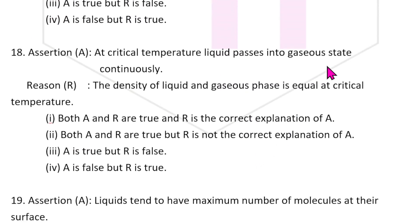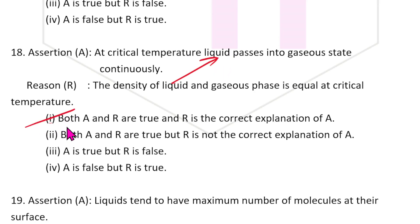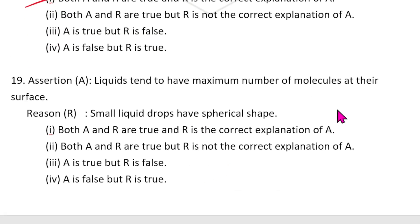Question 18: At critical temperature, liquid passes into gaseous state continuously — correct. The critical temperature is the temperature at which liquid and gas are in equilibrium simultaneously. The density of the liquid and gaseous phase is equal at critical temperature. The answer is A.